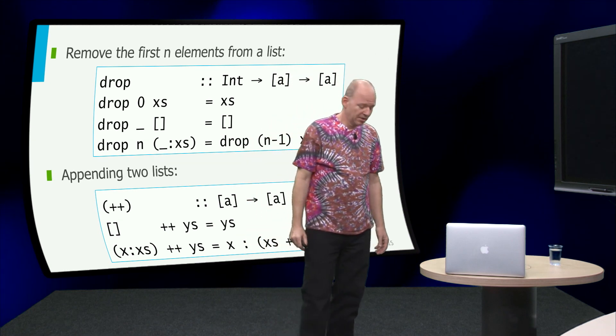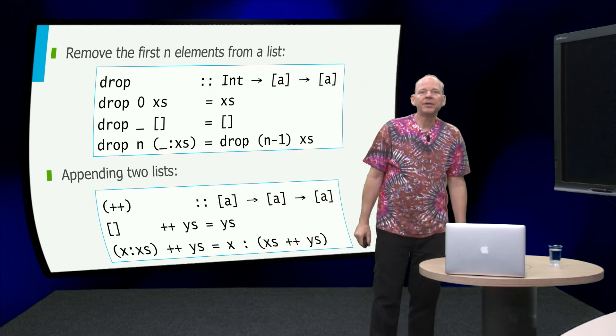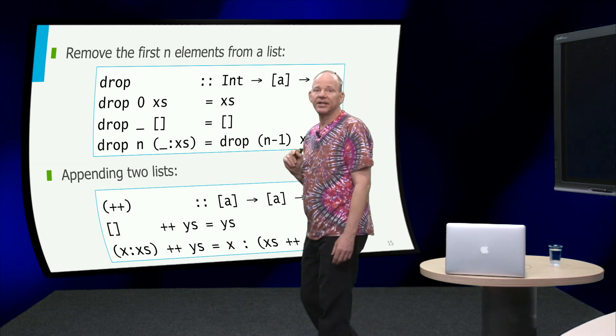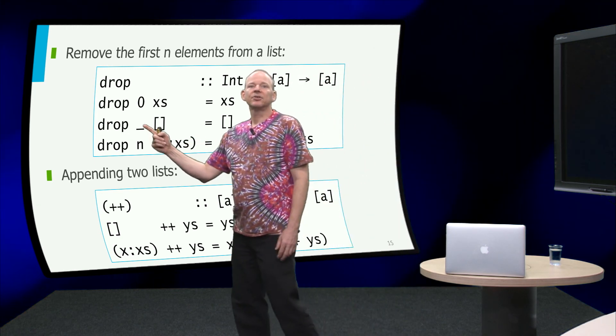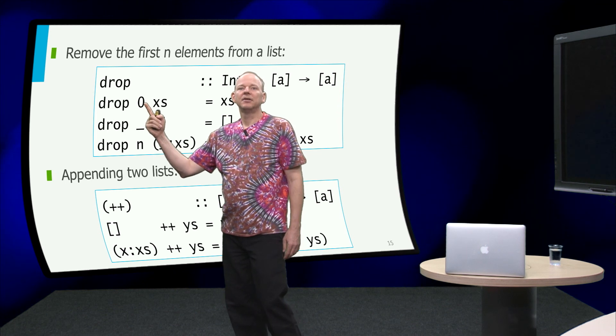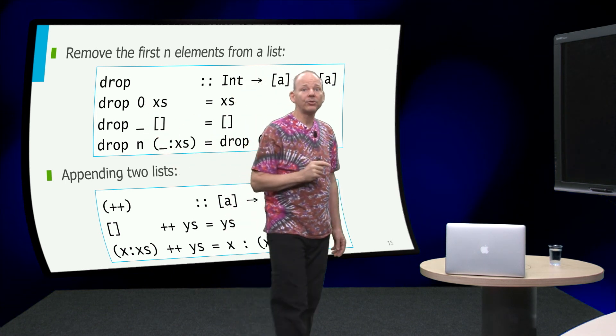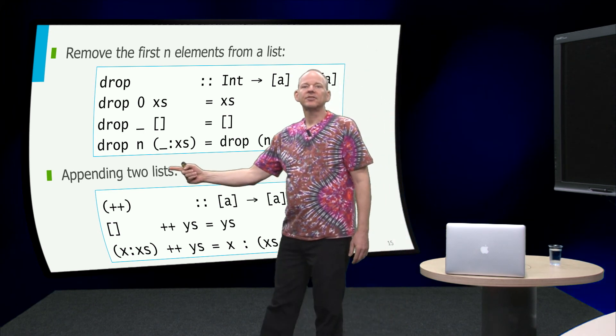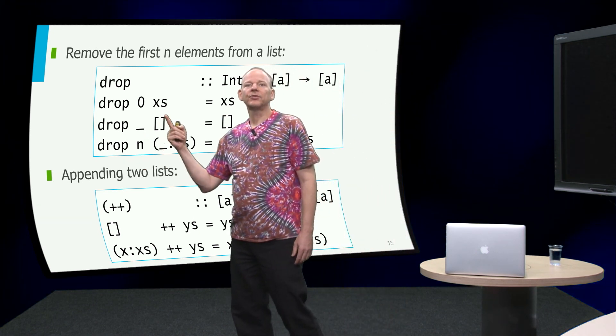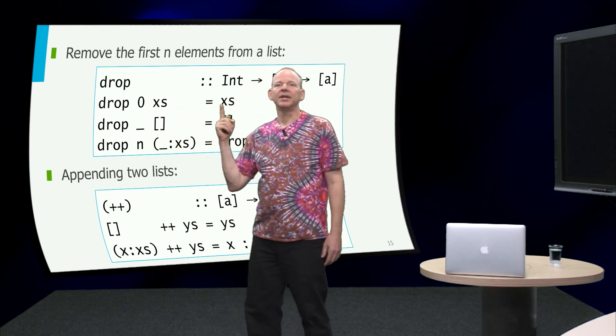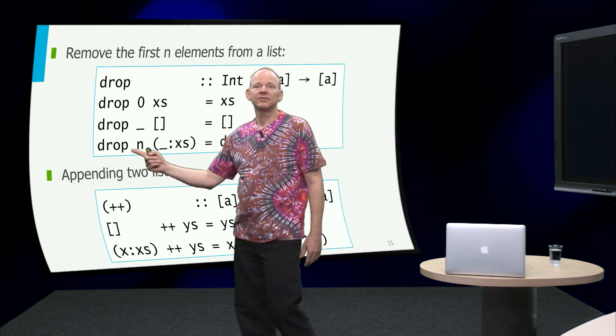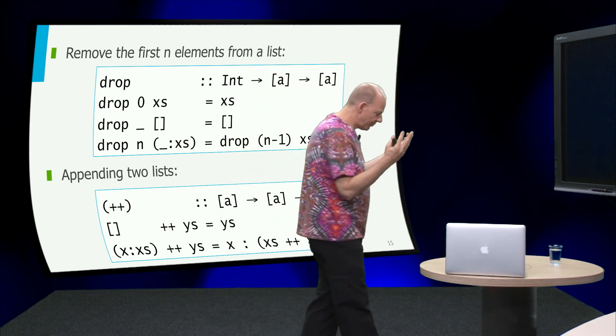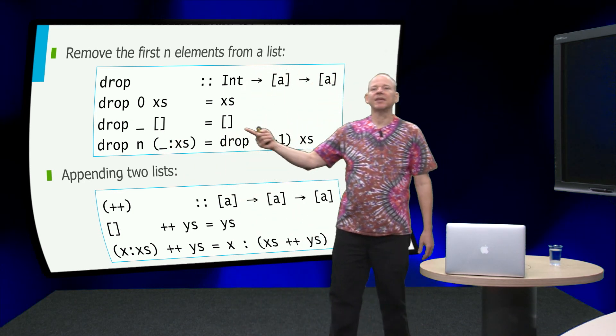Good, a few more functions, drop takes an integer and a list, and returns a list. And what this thing is doing, it is recursing over both the integer and the list. So in this case, when we say we want to drop zero elements from a list, well that's the same list. If we have the empty list, we can drop whatever we want, but you know we won't get very far, so we just return the empty list.